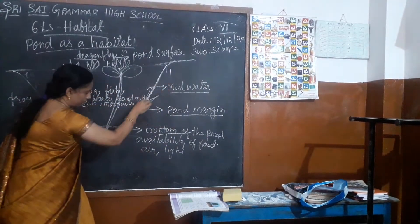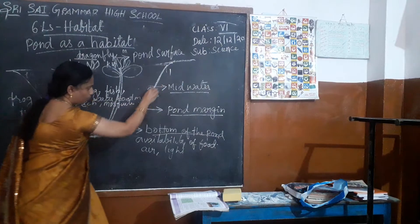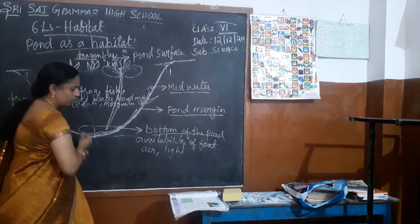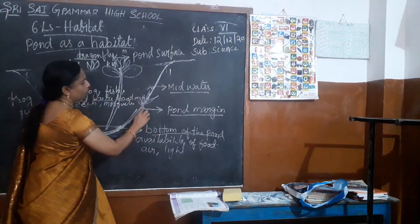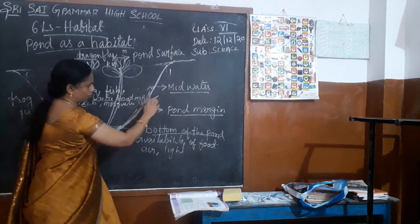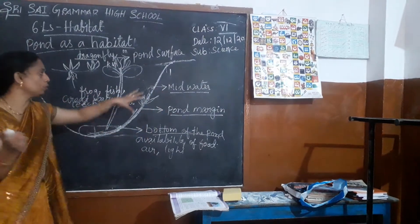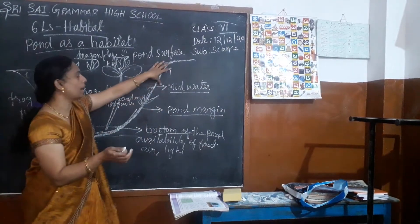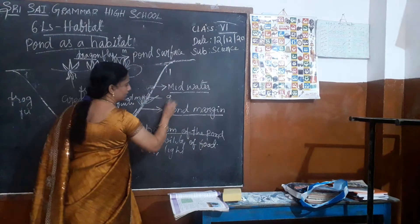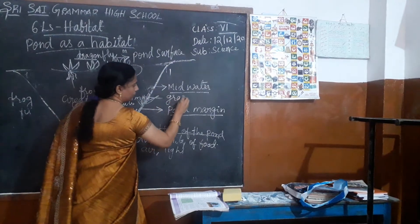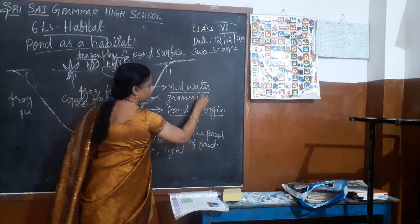It is the margins — you can see the margins. In the pond margins you can see several grasses also. You have seen the sides of the ponds — most of the plants will grow there. Mostly grasses, and snails are also present.